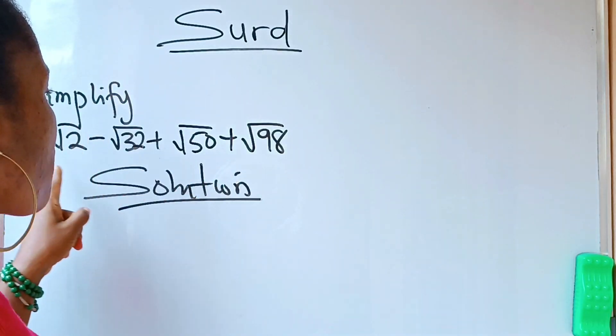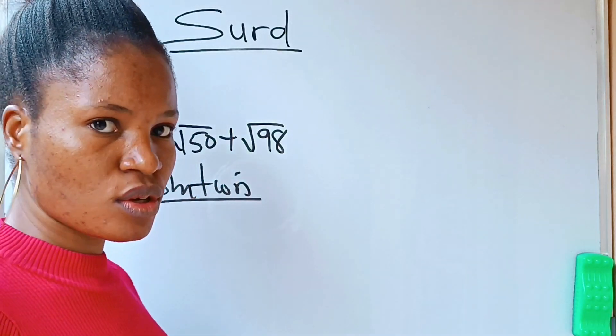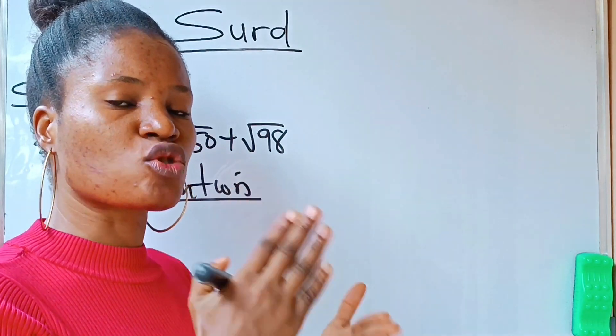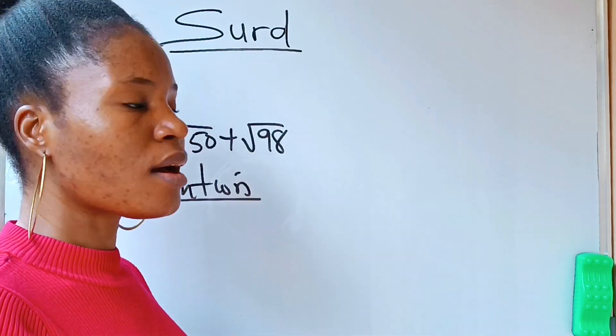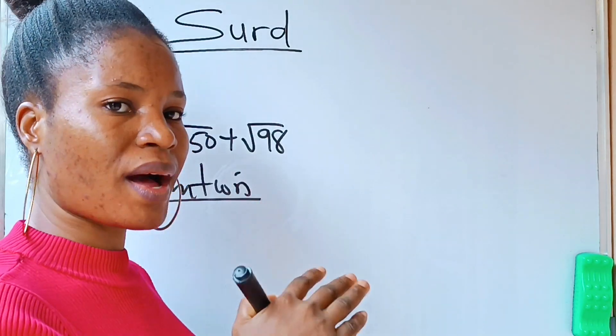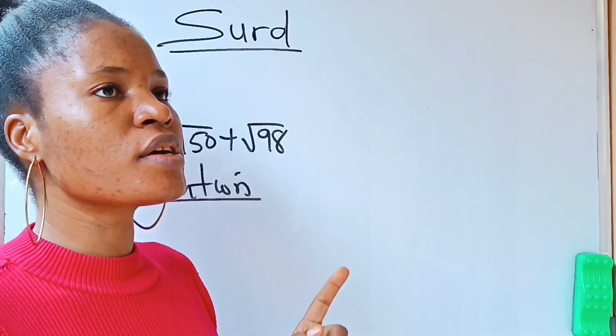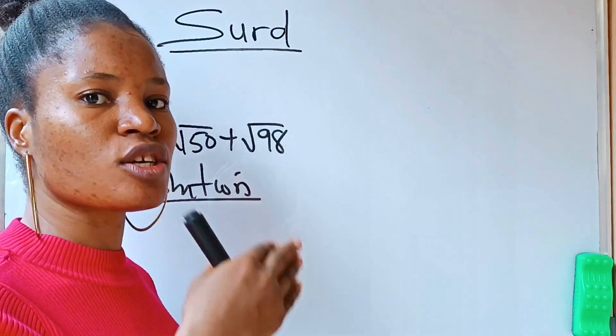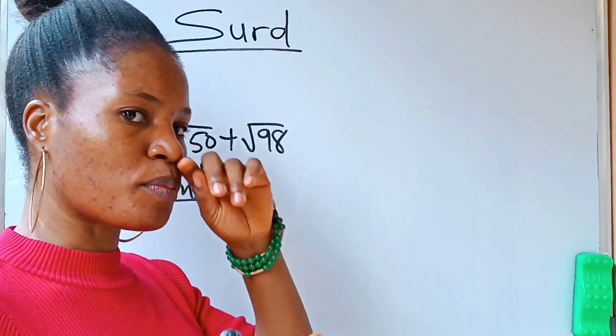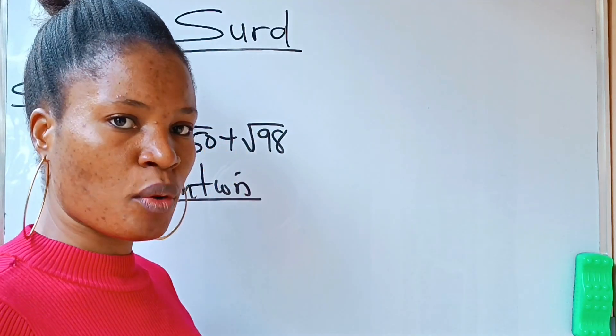To simplify a surd, you need to split that number into two parts. One is going to be a perfect square, and the other one is going to be an ordinary number.